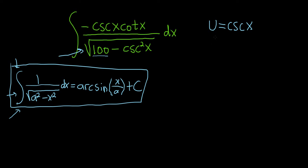Then du, the derivative of cosecant, is negative cosecant cotangent. So negative cosecant x cotangent x dx. And that's exactly what we have here. So things worked out really nice in this problem.